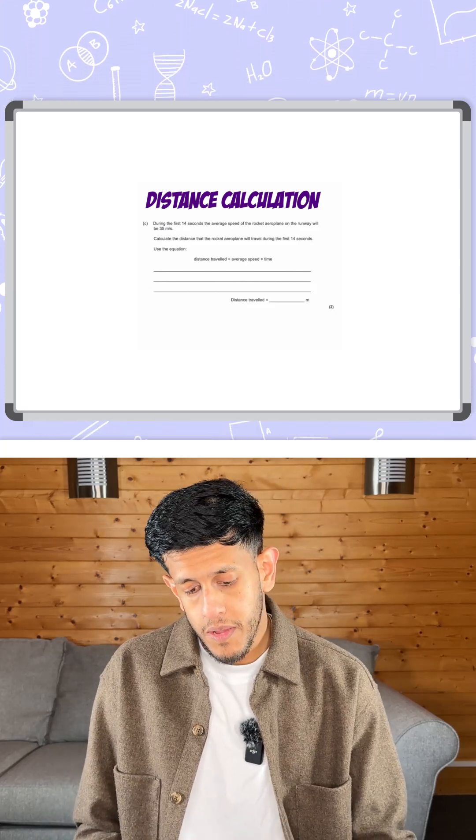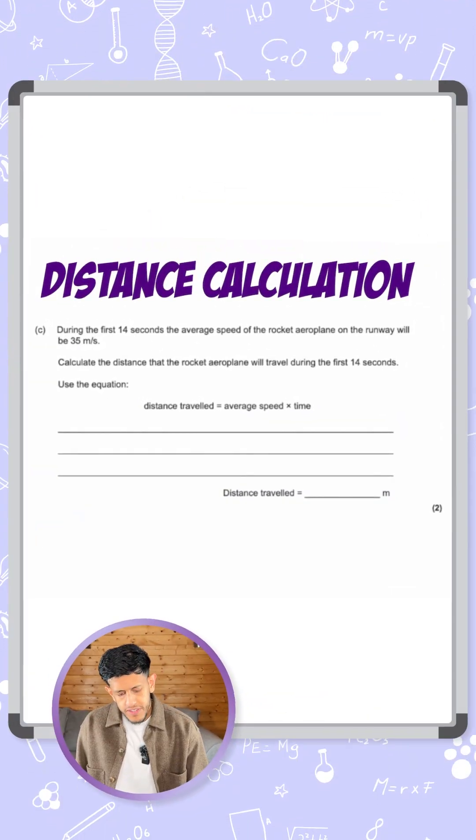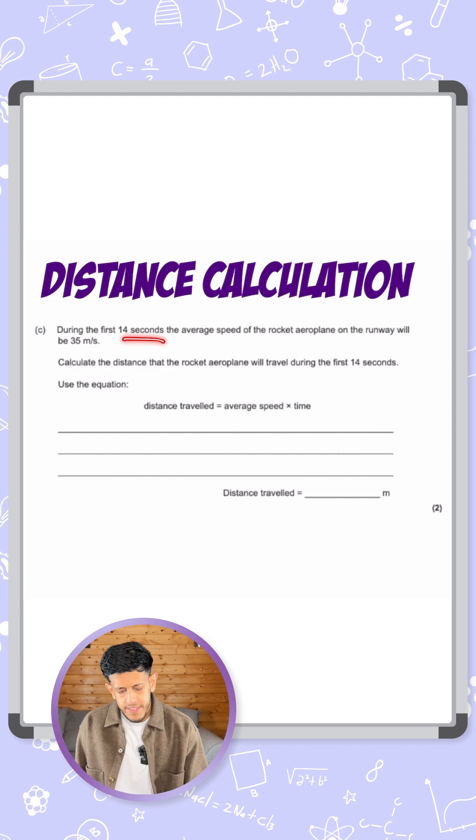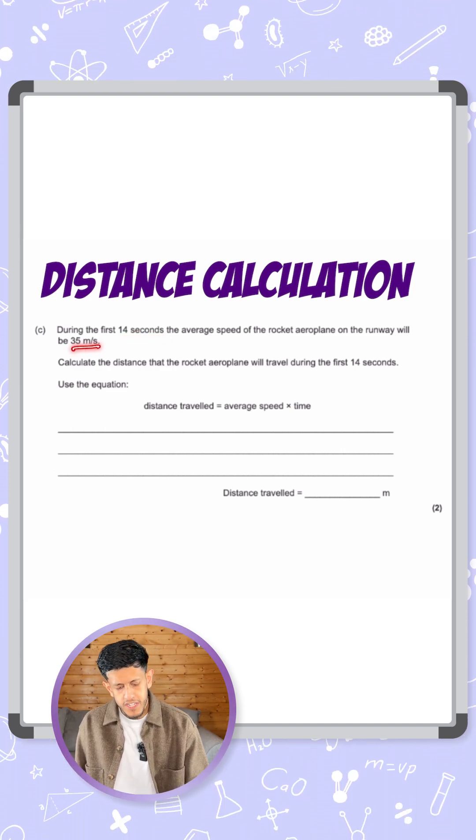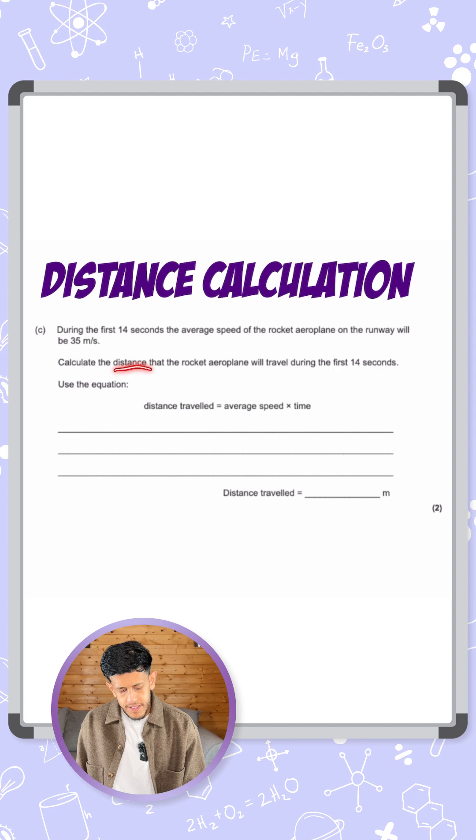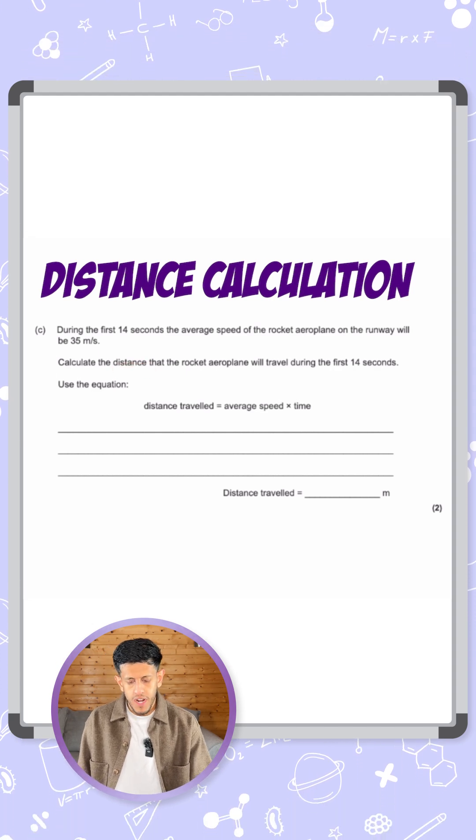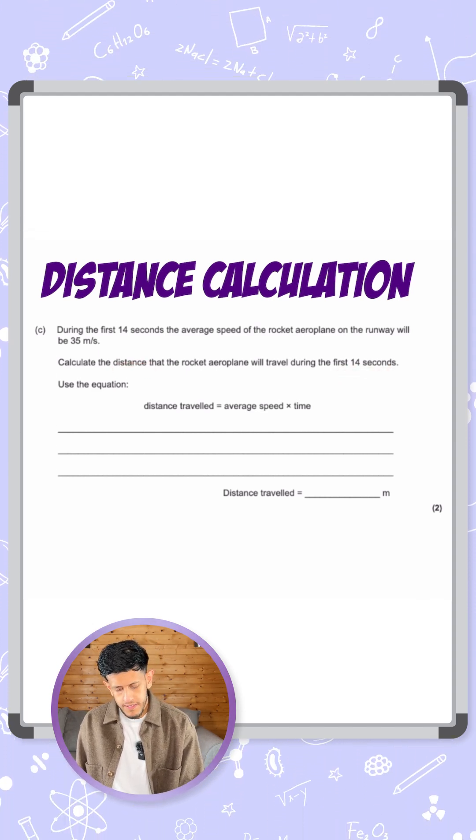Okay, now let's take a look at this question talking about calculating distance. So it says during the first 14 seconds, the average speed of the rocket airplane on the runway will be 35 meters per second. Calculate the distance that the rocket airplane will travel during the first 14 seconds.